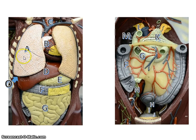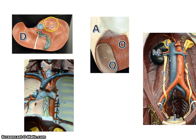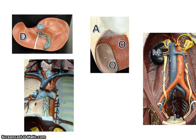One more time through: lungs, heart, trachea, liver, stomach, large intestine, small intestine, diaphragm, large intestine again, rectum, anus, bladder, appendix, small intestine, pancreas, adrenal gland, kidney, liver, gallbladder, thyroid gland, trachea, esophagus, left lung, diaphragm, spleen, adrenal glands, kidney, ureter, bladder.